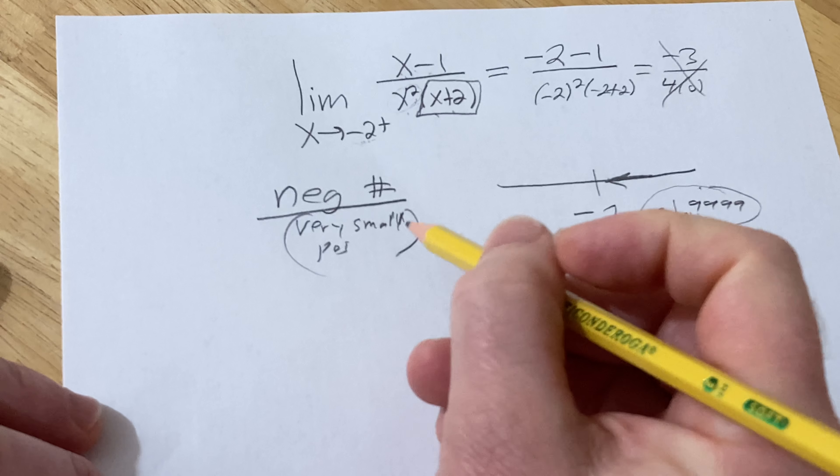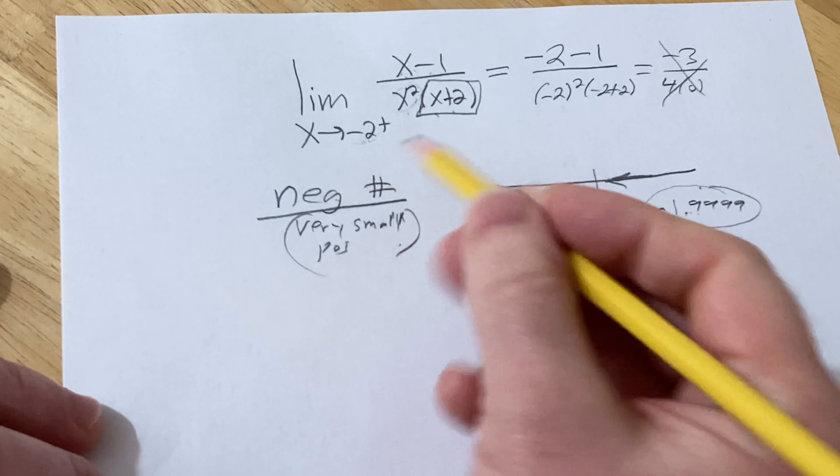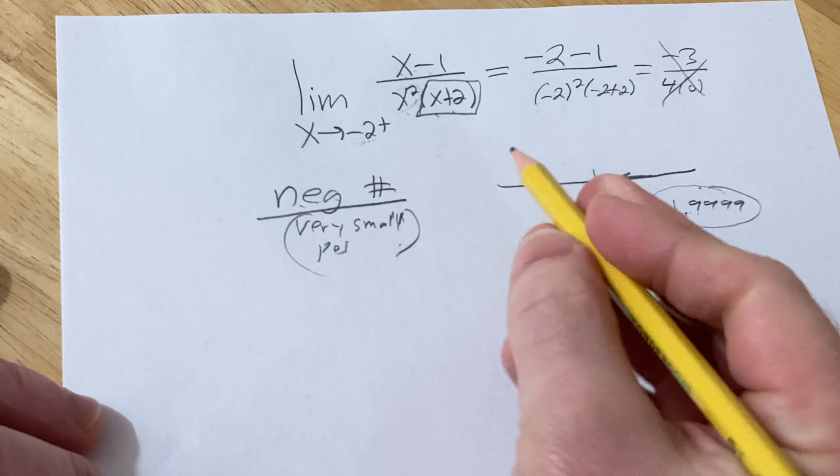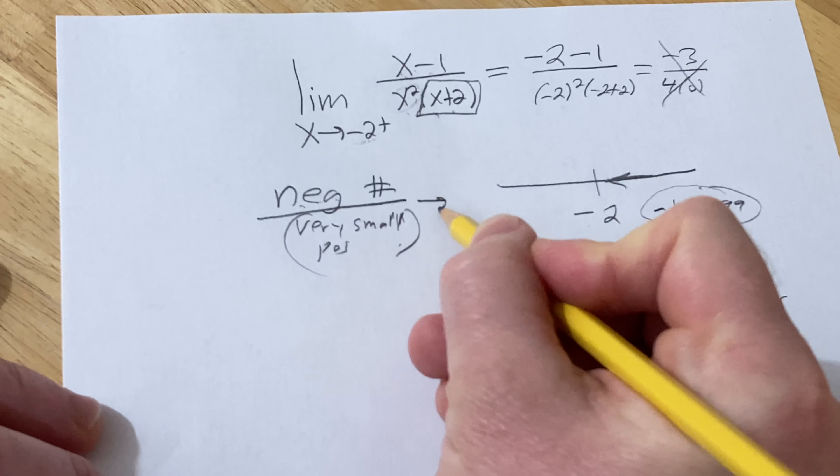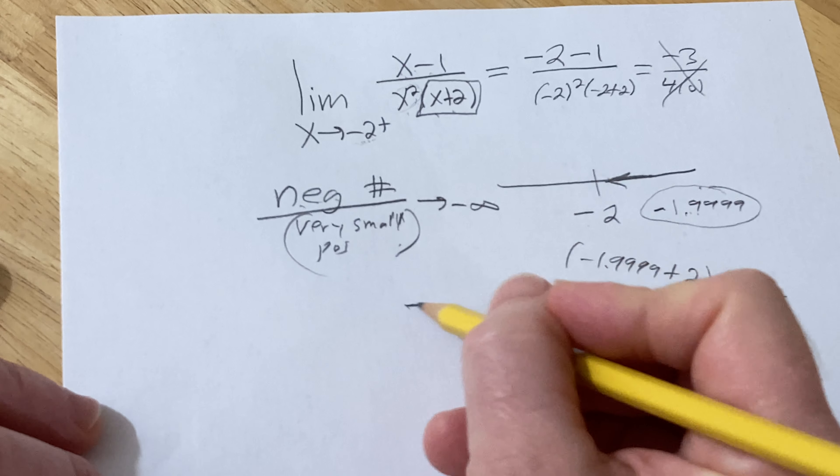Whenever you have something small on the bottom, the fraction becomes big, except there's a negative in this fraction. So this is going to approach negative infinity. So the answer in this case is going to be negative infinity.